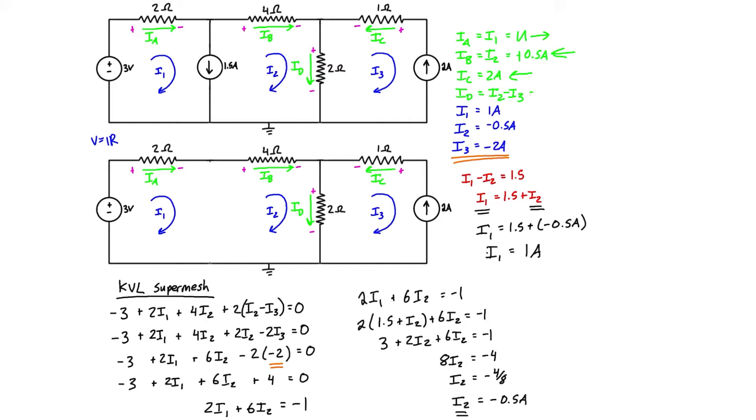id is just equal to i2 minus i3, and if you're plugging those in directly, we have negative 0.5 minus negative 2, and that is positive 1.5 amps. The positive means we have the correct direction which we assumed it to be going down, so it is in fact going down. So there you go guys, that is another example on using super mesh analysis.